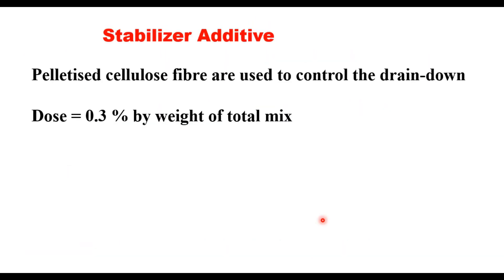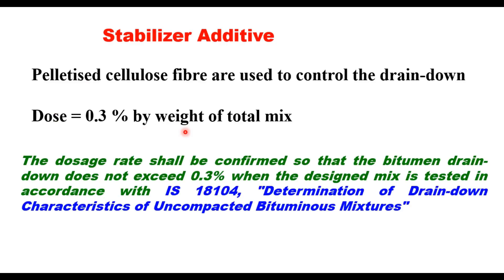Since SMA is a bitumen-rich mix, pelletized cellulose fibers are used to control the drain down. The dose of these fibers can be 0.3 to 0.5% by weight of total mix. This is to be estimated using a procedure given in either IS 18104 or AASHTO T305, and the drain down should not exceed 0.3% by weight of the mix.